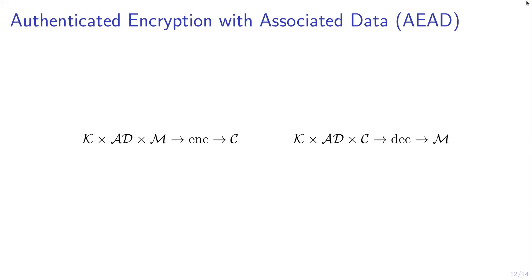The other primitive we used is authenticated encryption with associated data (AEAD). The encryption algorithm takes in a key, associated data, and a message, and outputs a ciphertext. The decryption algorithm takes in the key and associated data, and the ciphertext, and outputs the message. Since we have assumed algorithms may implicitly fail, we don't need to explicitly specify rejection — if the decryption algorithm wants to reject the ciphertext, it can just abort, and the error message will be forwarded to the adversary.